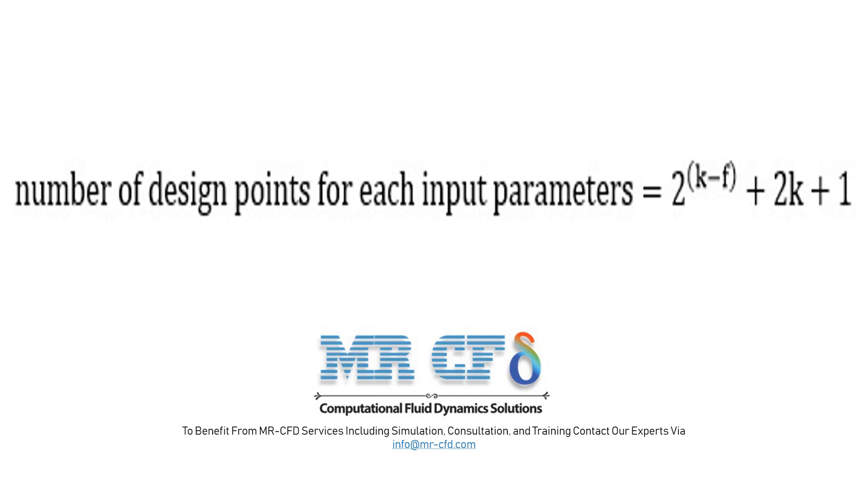And 2 power (k minus f) indicates the total number of modes where the parameters have values between the maximum or minimum mode and the intermediate mode, level minus one or level positive one.